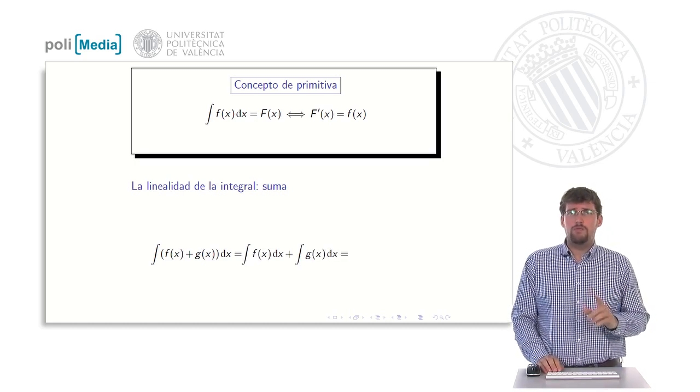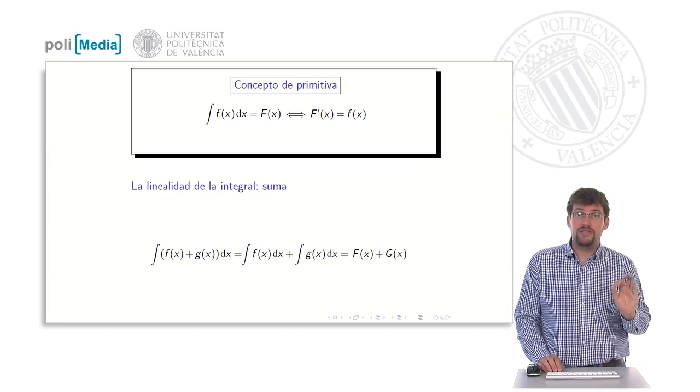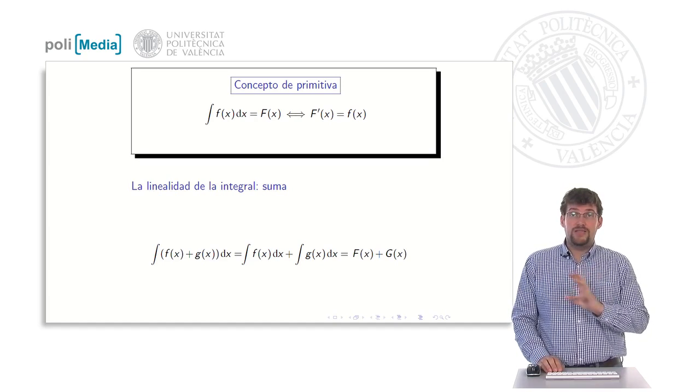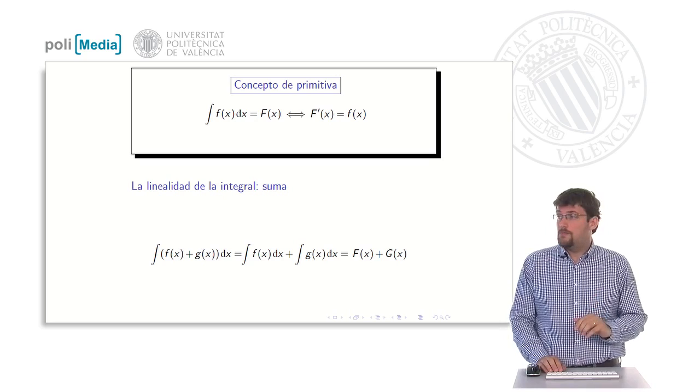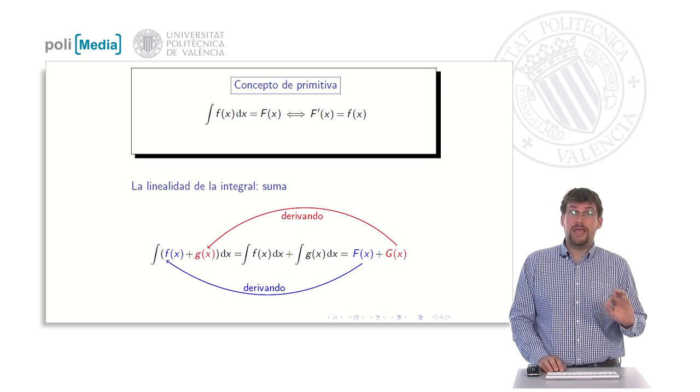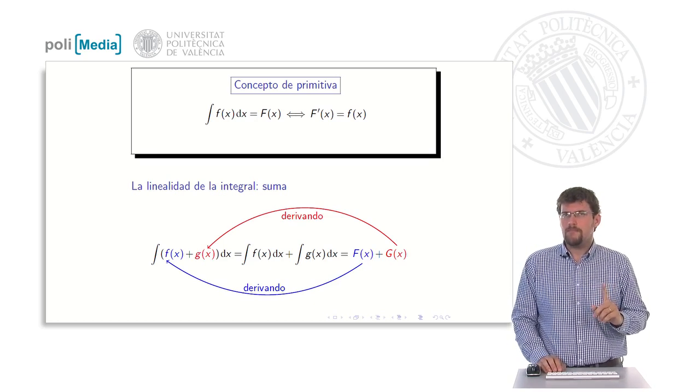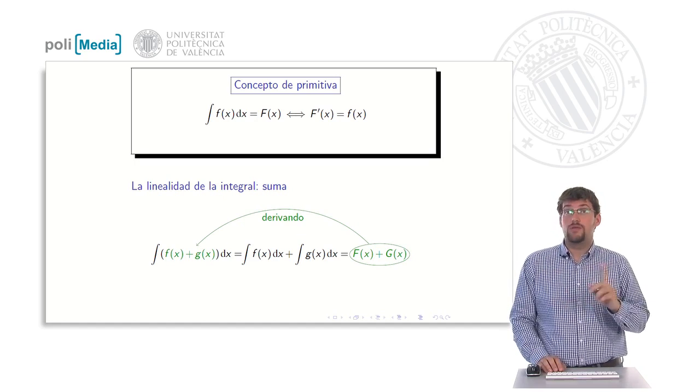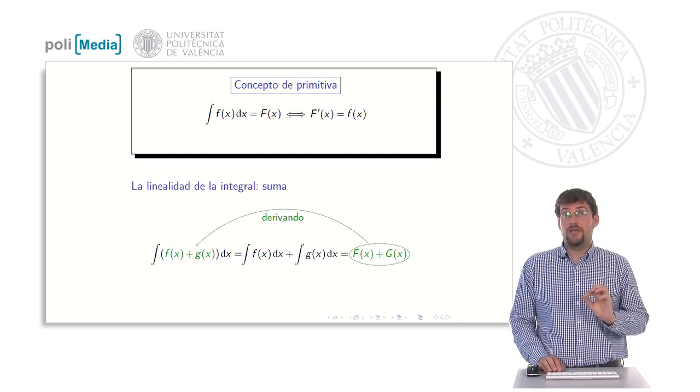In order to check if that is indeed the case, we are going to use the definition we have seen above. The integral of f dx would be a certain uppercase F, and the integral of g dx would be a certain uppercase G of x. Is it true that uppercase F plus uppercase G is the antiderivative of f small plus g small? Let's check it. The derivative of the uppercase F would be the lowercase f, and the derivative of the uppercase G would be the lowercase g. This happens simply because F is an antiderivative of f, and G is an antiderivative of g. If now we take uppercase F and uppercase G together and derive that sum, it turns out that its derivative is the sum of the derivatives, and therefore it is indeed f small plus g small.